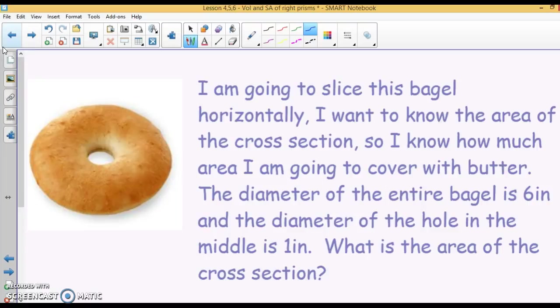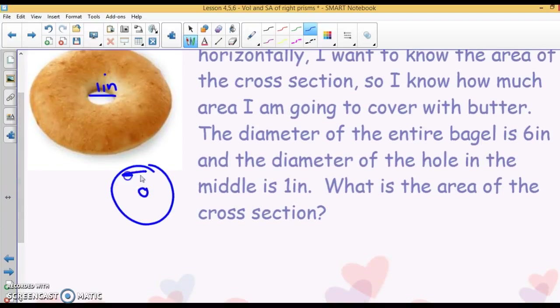I'm going to slice this bagel horizontally. I want to know the area of the cross section, so I know how much area I'm going to cover with butter. The diameter of the entire bagel is 6 inches, and the diameter of the hole in the middle is 1 inch. This is 6 inches and this is 1 inch. So if I slice this thing horizontally, my slice is going to go across just like you're slicing it with a knife. Isn't my cross section going to look like this? My cross section is going to look like that, and I'm going to put the butter.